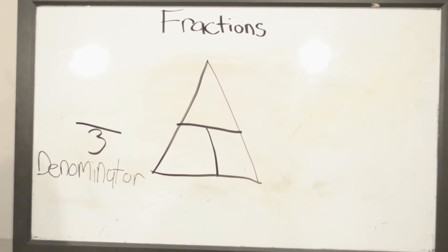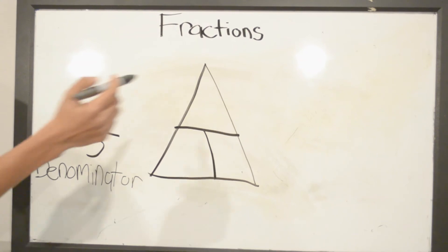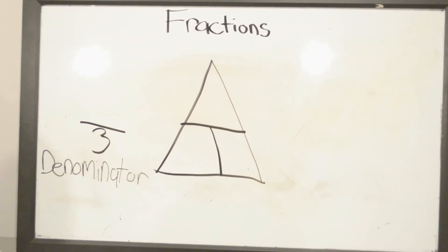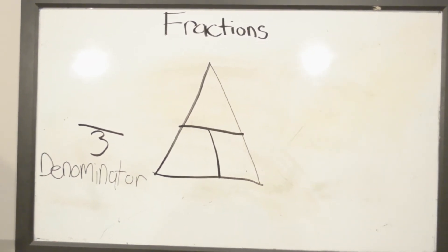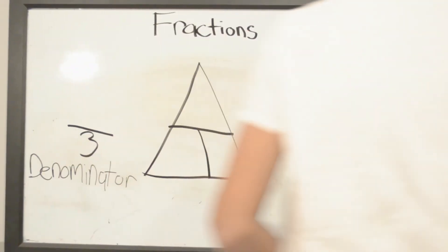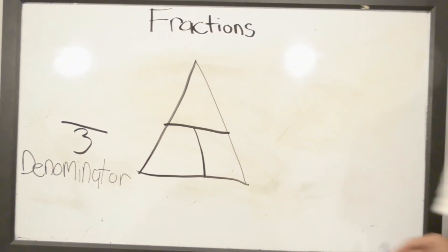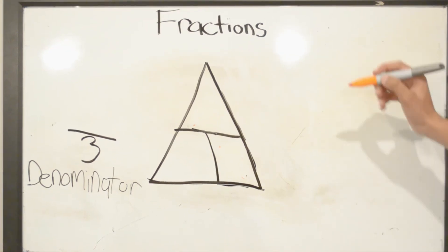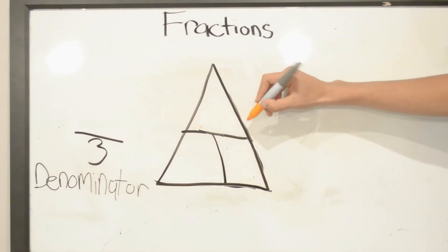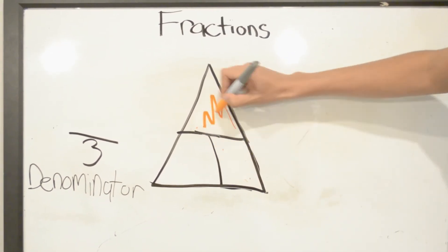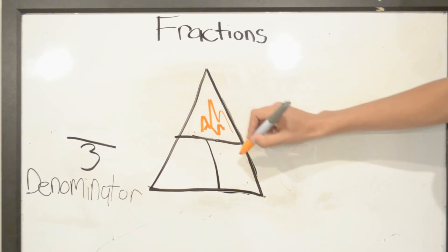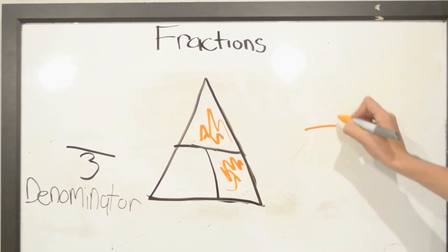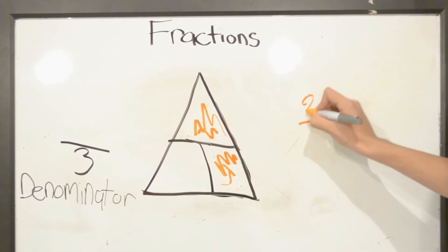Our denominator is 3 because there are 3 parts: 1, 2, 3. So now we move on to our numerator. For our numerator, we will shade in 2 parts: 1, 2. Right here we write down 2.